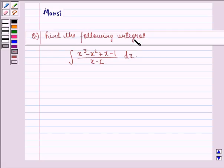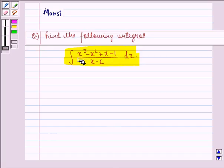The question says find the following integral: the integral of x³ - x² + x - 1 divided by x - 1, dx.